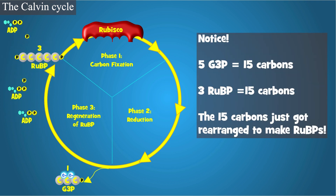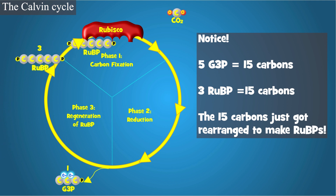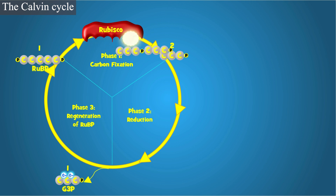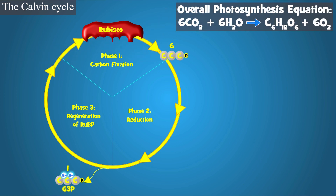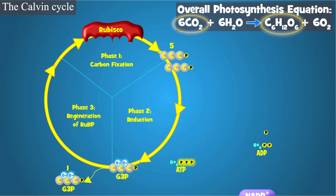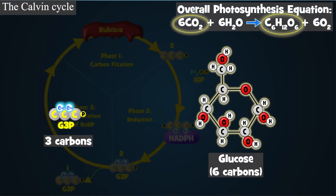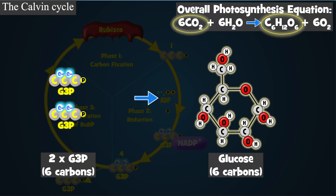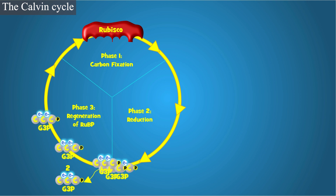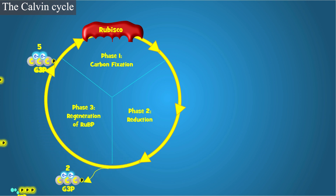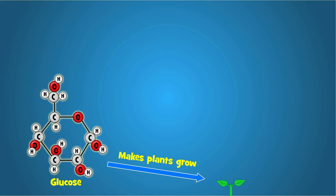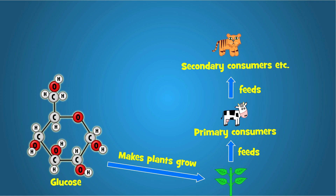Now that we've completed the Calvin Cycle for three carbon atoms, let's go through the process again so that we can make glucose. Remember, our overall photosynthesis equation has six carbon dioxides being used to make one glucose molecule with six carbons. With this in mind, two G3Ps are needed to make one glucose. Now you have seen how the Calvin Cycle is used to make glucose, and how light-dependent reactions provide the NADPH and ATP needed to make the Calvin Cycle work. The glucose and other organic compounds made as a result of these processes in photosynthesis are what allow plants and algae to grow and support practically all life energy, including you.